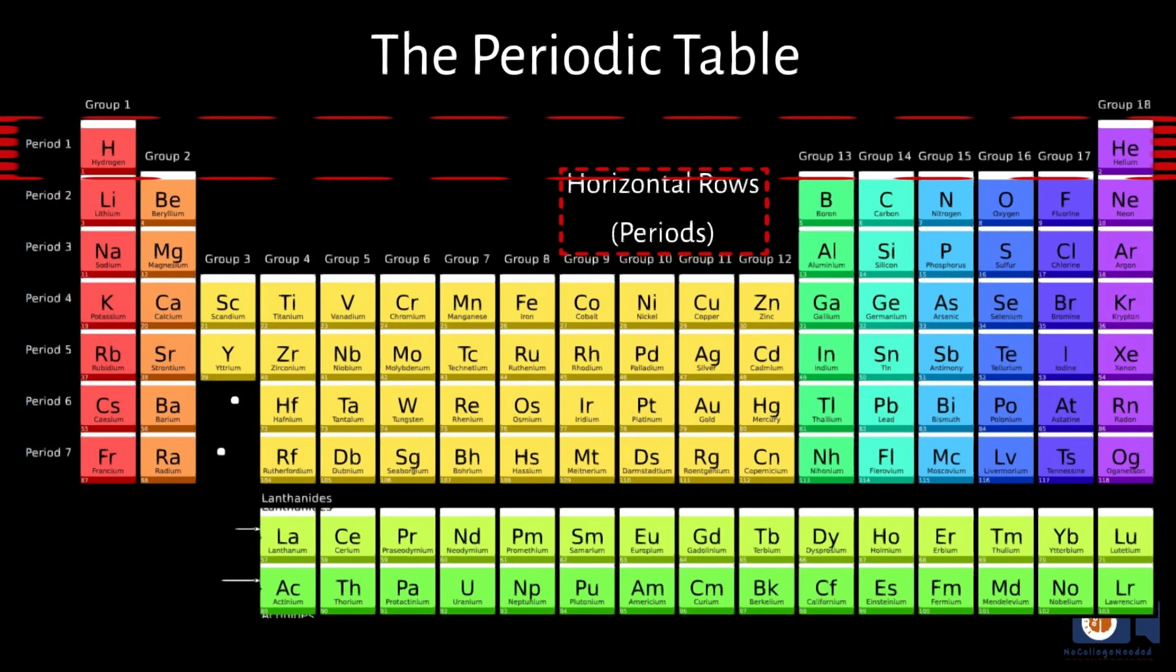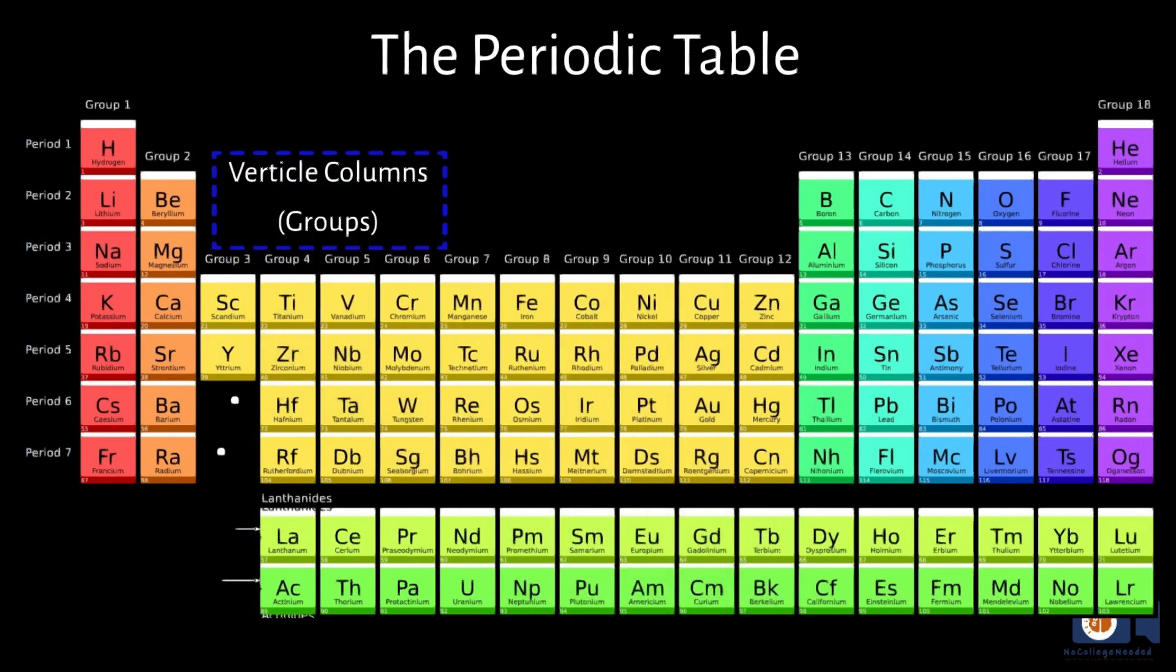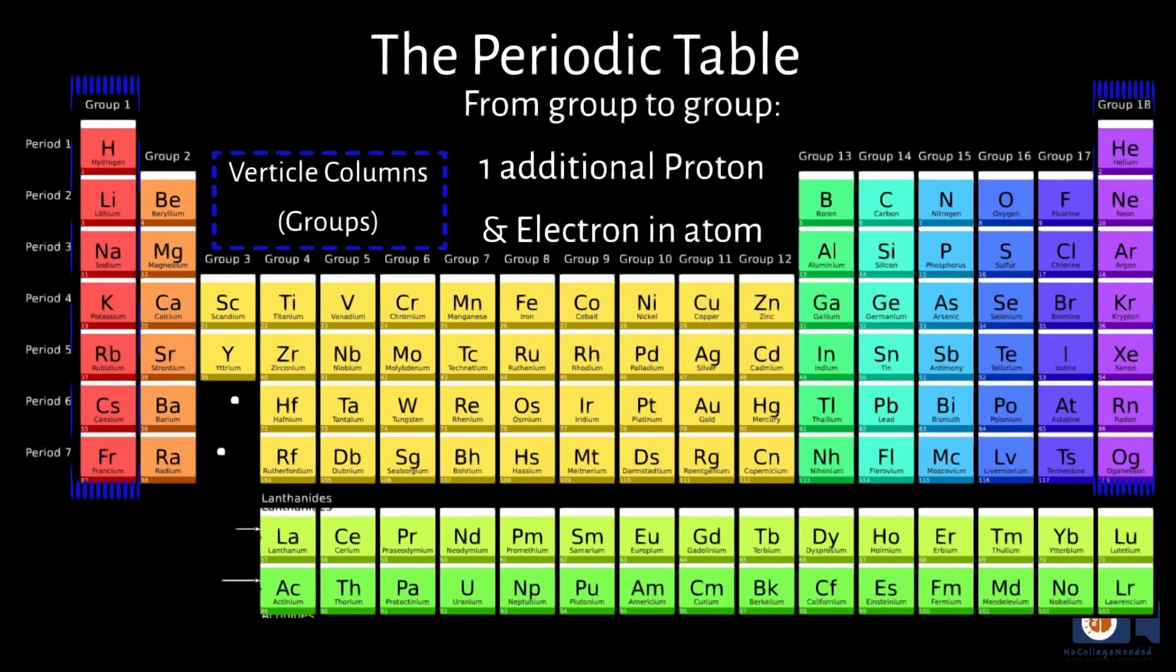As you go down periods or rows to the second and third, an additional electron shell is added to the atom. The vertical columns, called groups, are labeled somewhat arbitrarily, but as you go from group to group, there is one additional proton and electron in the atom.